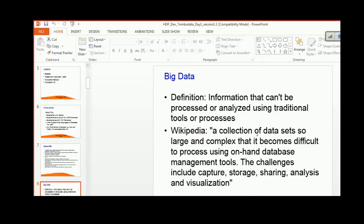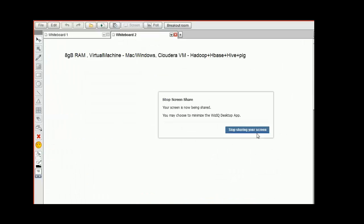What is big data? This is one of the most overhyped terms you hear nowadays. According to Wikipedia, it's a collection of data sets so large and complex that it becomes very difficult to process using database management tools. The challenges include capturing, storage, sharing, analysis, and visualization. Big data is data that exceeds the processing capability of conventional database systems.